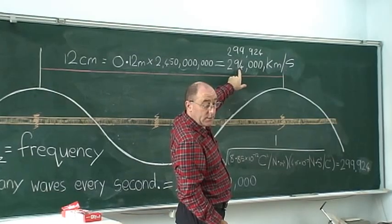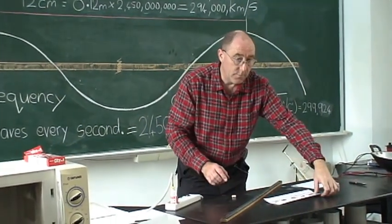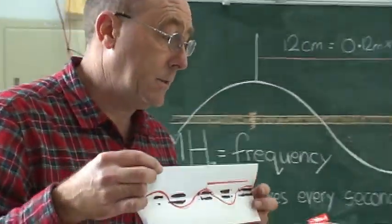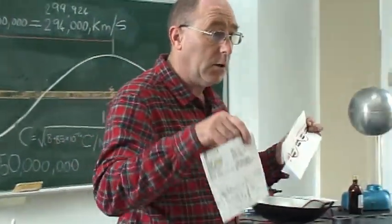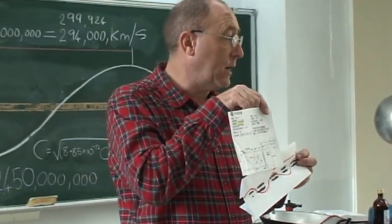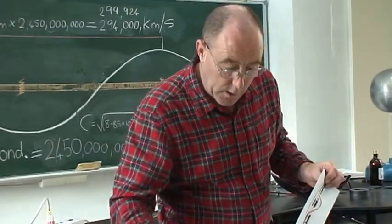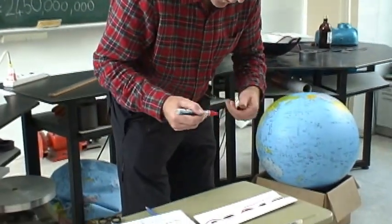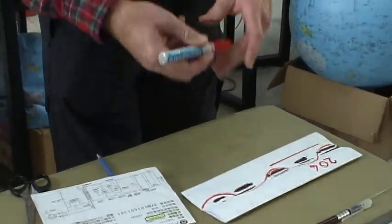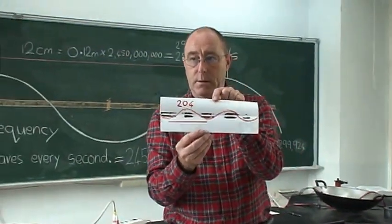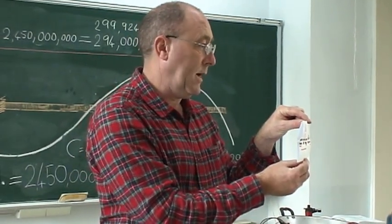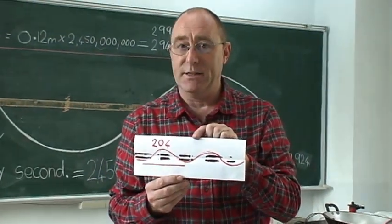Now, what I'm going to do is put your class number on here — you are class 204. I can copy this from the back of the microwave and put it onto one worksheet so you can do the maths yourself. And then later we'll put this onto YouTube so everybody can see how to measure the speed of light. Thank you very much.